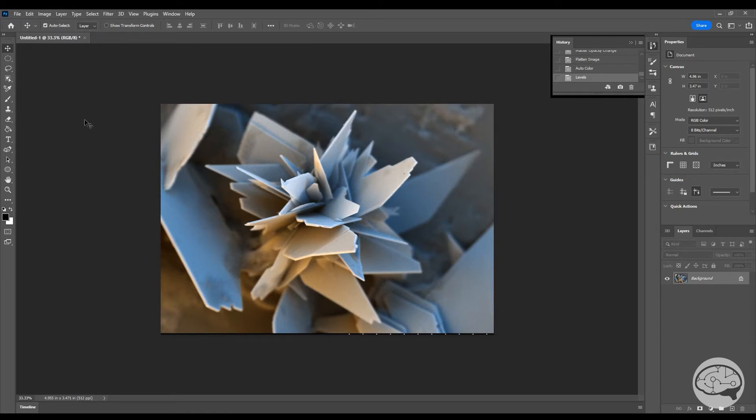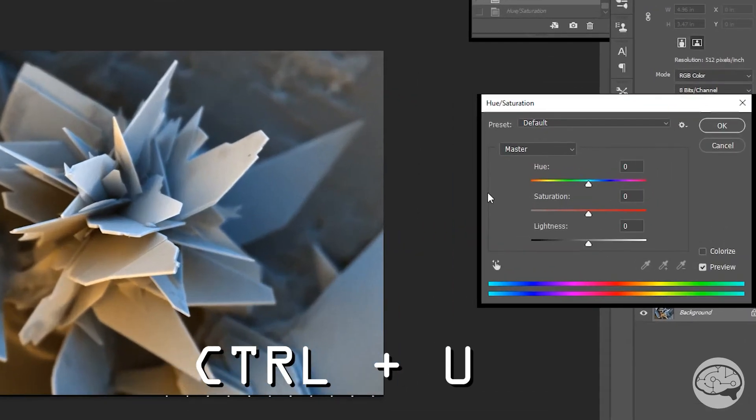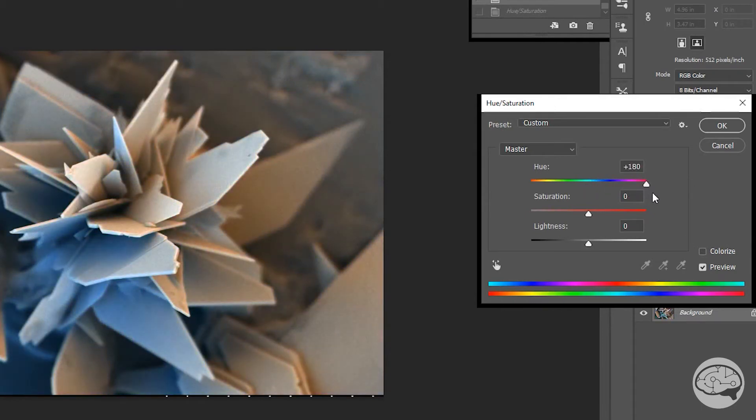First, let's say we're not 100% happy with these specific colors. We can back up several steps and switch which BSE images we were using or which RGB boxes we had checked in the layers. Or we can hit Ctrl U and open up the Hue Saturation window. Here, we can actually shift the colors around. So we can move this slider around until we have exactly what we want.